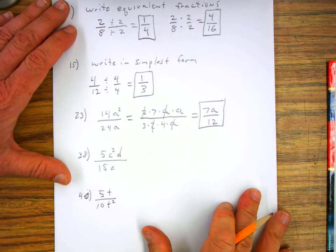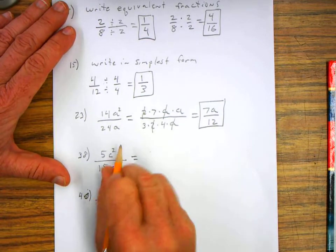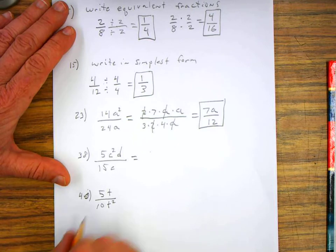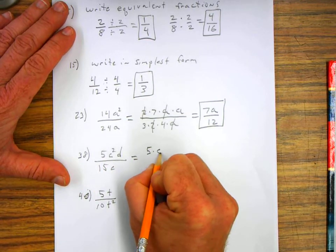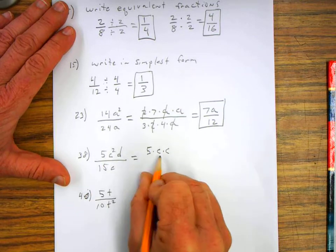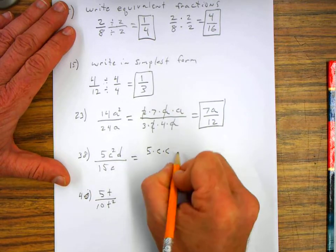Number thirty-eight. Okay, again, they want us to write it in the simplest form. So I can't do anything with a five, but I can expand out that c, because it's c squared, which is meaning to write c times c times d.